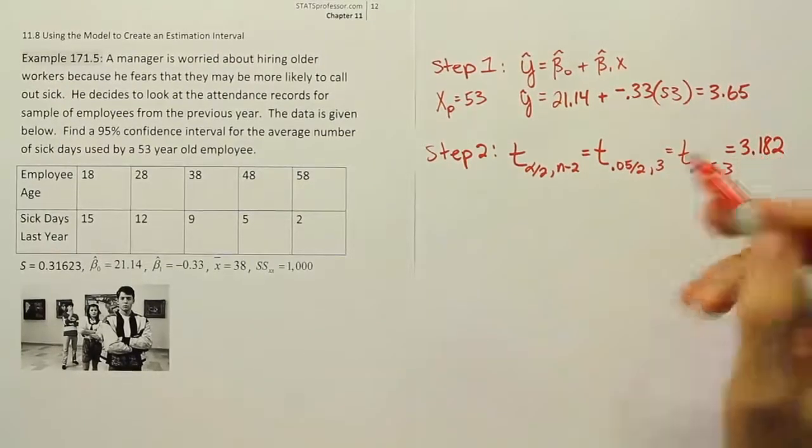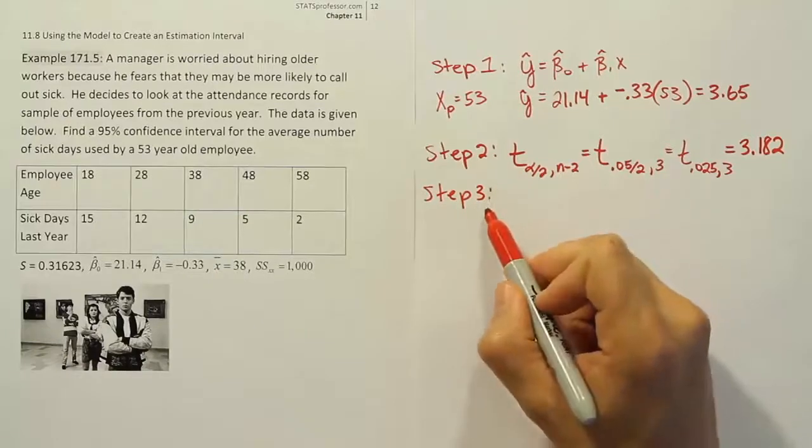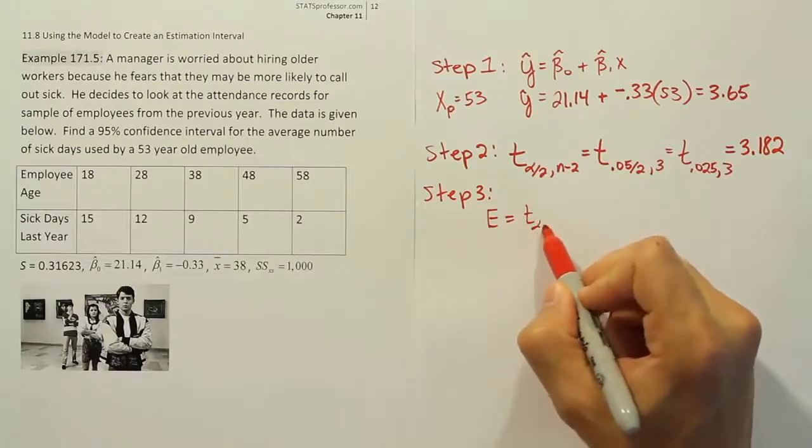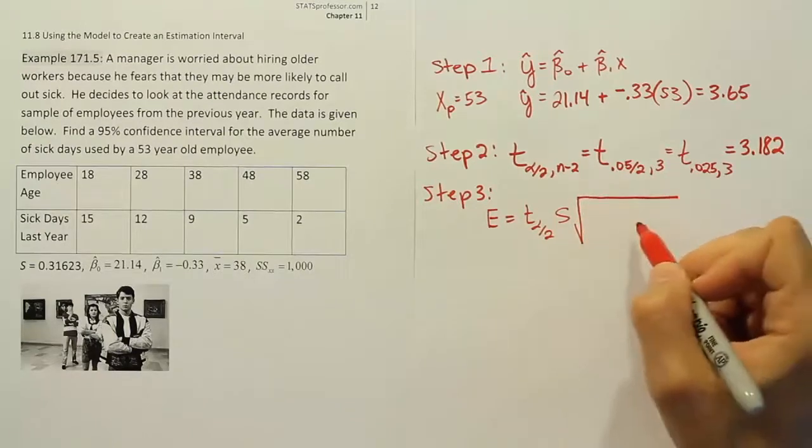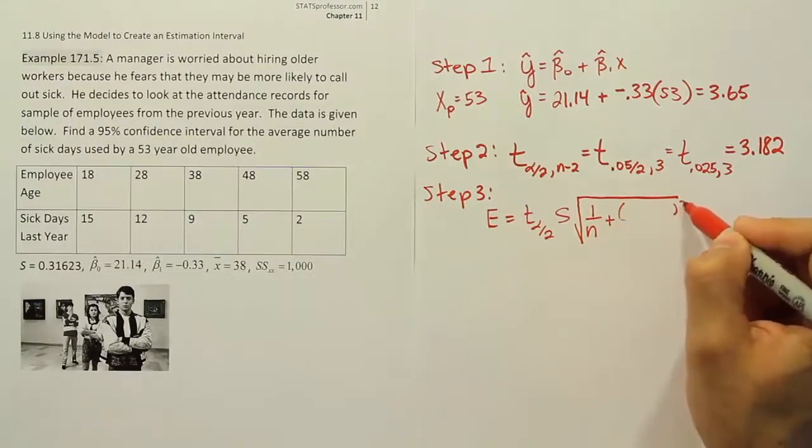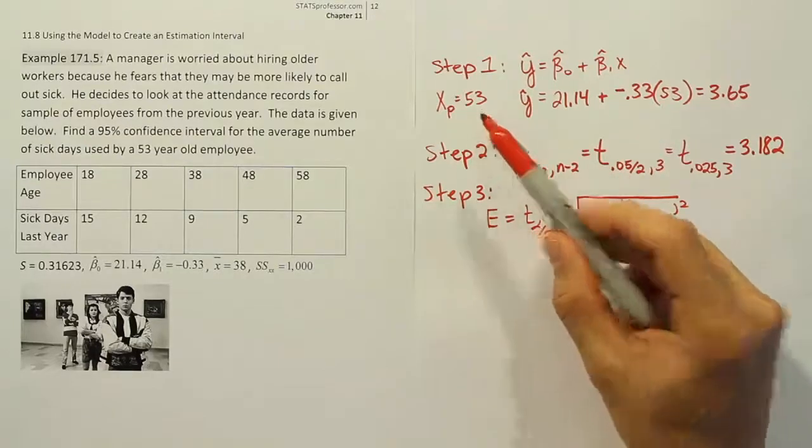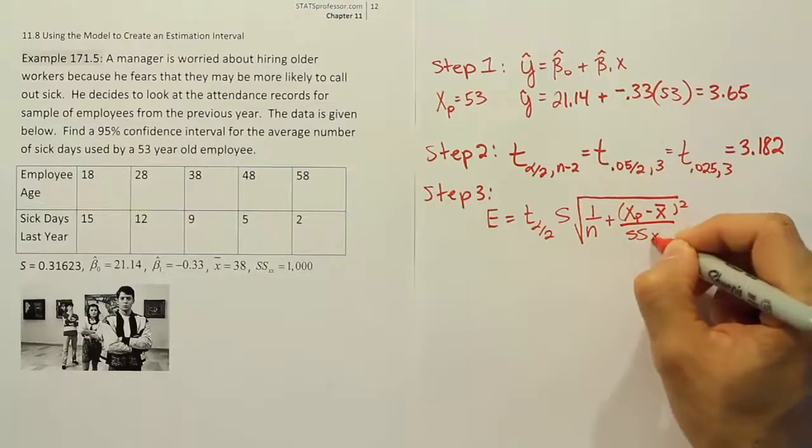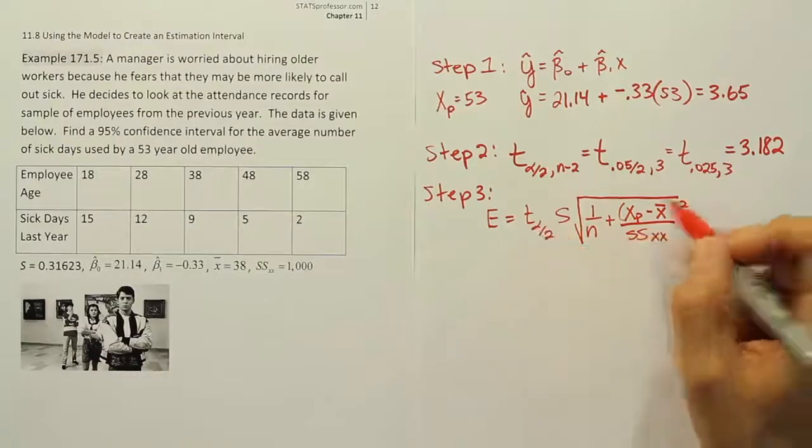Now that we have our table value, we go on to step 3. Your step 3 is usually the margin of error step. That margin of error is actually a fairly complicated formula, but we have everything we need to fill it in. The margin of error is going to be t alpha divided by 2 times s times the square root of 1 over n plus, and this expression is squared: xp minus the sample mean x bar divided by the sum of squared values for the x's, the variation estimator for the x's.